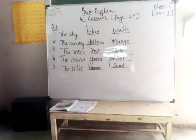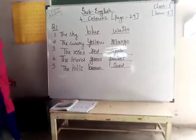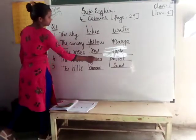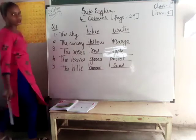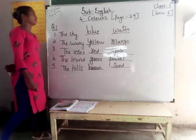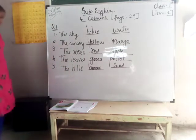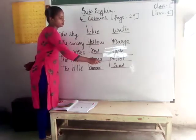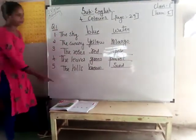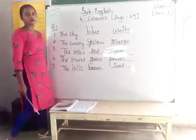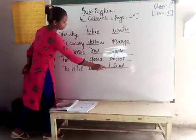Next, the roses — red: R-E-D. Apple: A-P-P-L-E. Apple. Next, the leaves — green colour: G-R-E-E-N. Green. Parrot: P-A-R-R-O-T. Parrot. The hills — brown: B-R-O-W-N. Brown. Sand: S-A-N-D. Sand.